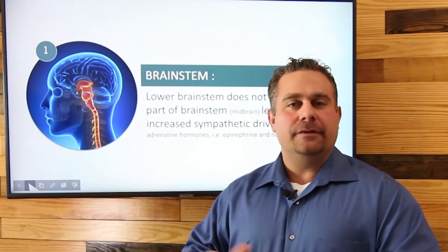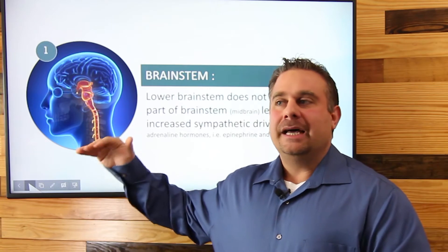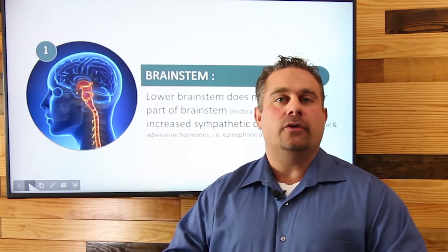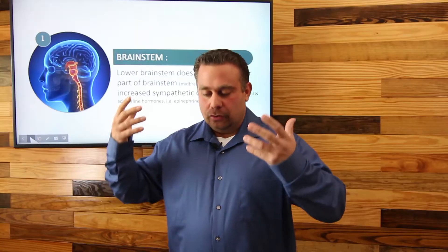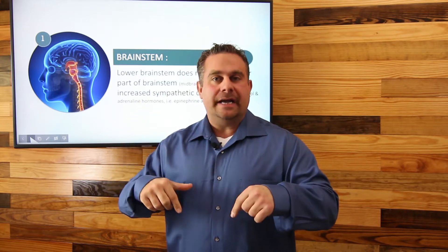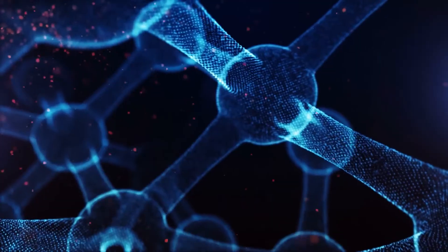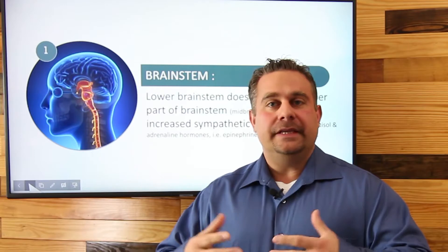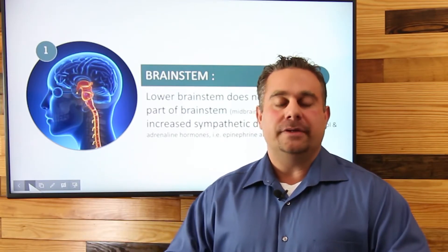What happens typically with fibromyalgia is that the lower part, the medulla, does not control effectively or inhibit the upper part of the midbrain, which controls our postural muscles. The upper part of that brainstem also affects and controls the spinal tracts that affect our adrenals, which produce adrenaline such as norepinephrine and epinephrine. These are stress hormones or adrenal hormones that really sensitize all our nerve fibers.